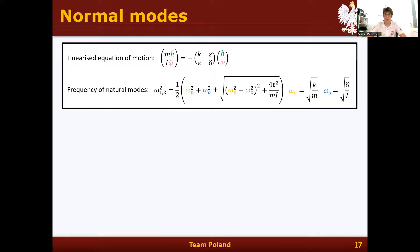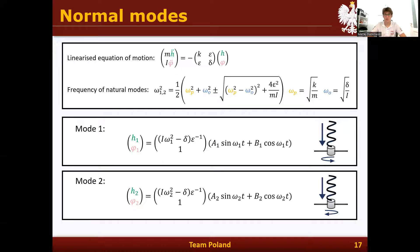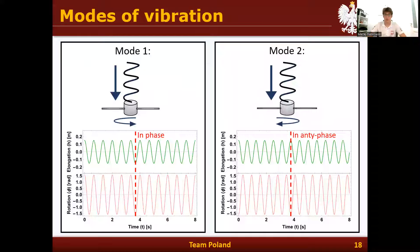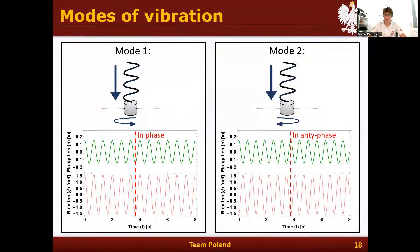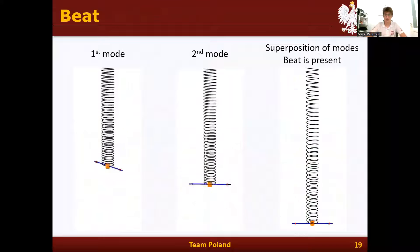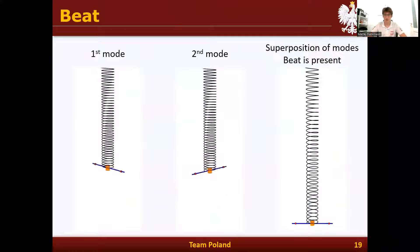Solving the linearized equations of motion leads to a solution with two normal modes. The first normal mode represents oscillations in phase — when elongation increases, rotation increases as well. The second normal mode represents anti-phase oscillations, where when elongation increases, rotation decreases. This can be clearly seen in the simulation of the pure first and pure second mode.